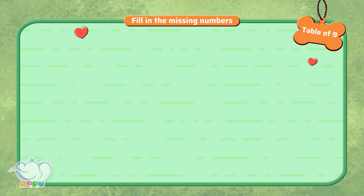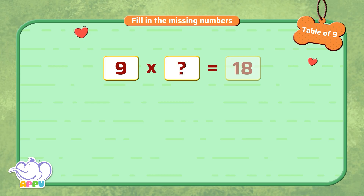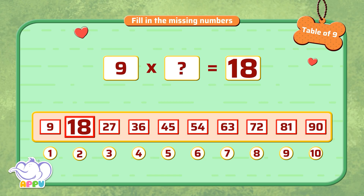Fill in the missing numbers. 9 multiplied by a number is 18. What is the missing number? The missing number is 2, because we have to skip count by 9 twice to get 18.